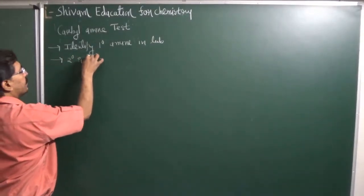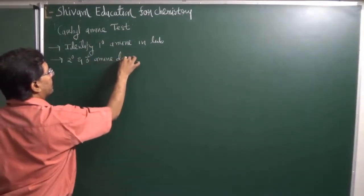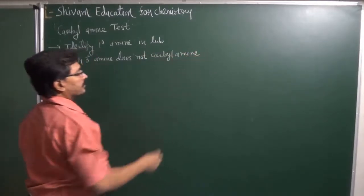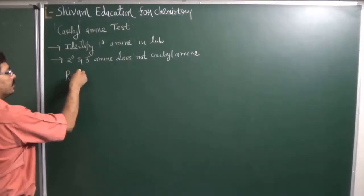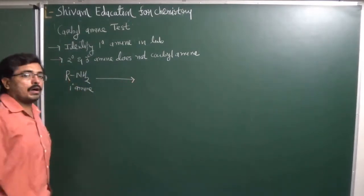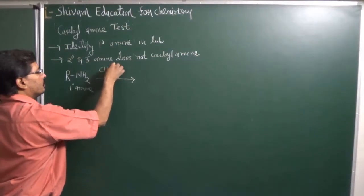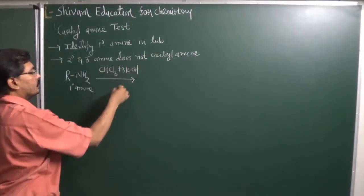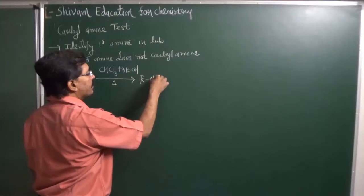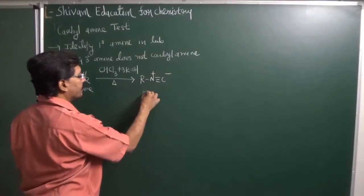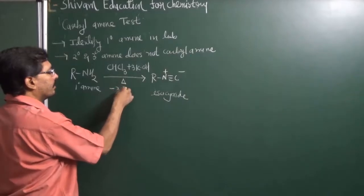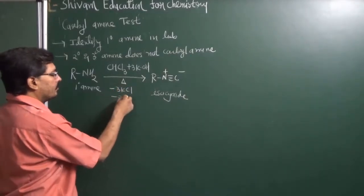Secondary and tertiary amines do not give the Carbylamine Test. In the Carbylamine Test, we have taken a primary amine. This primary amine is allowed to react with an alkaline solution of chloroform. The chloroform solution is prepared in potassium hydroxide. When we heat this, a foul-smelling, poisonous, and highly toxic isocyanide compound is produced, along with 3 molecules of potassium chloride and 2 molecules of water as by-products.